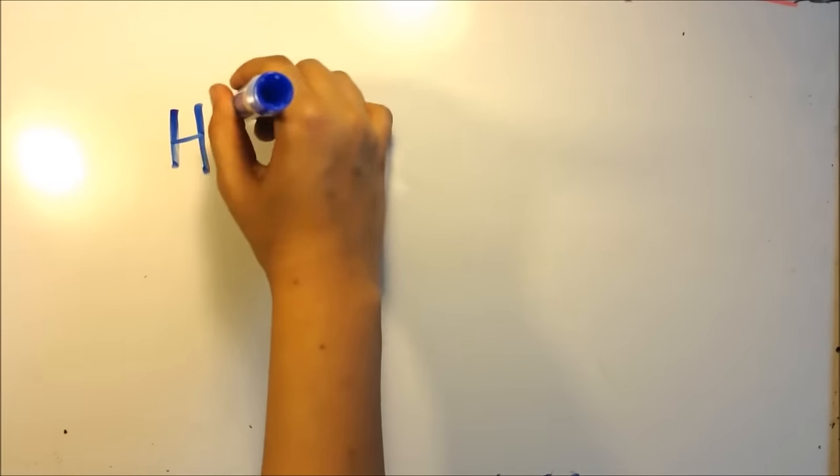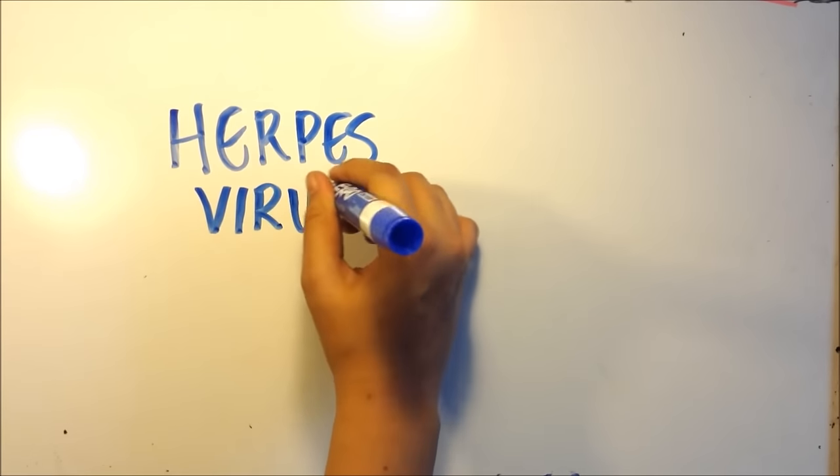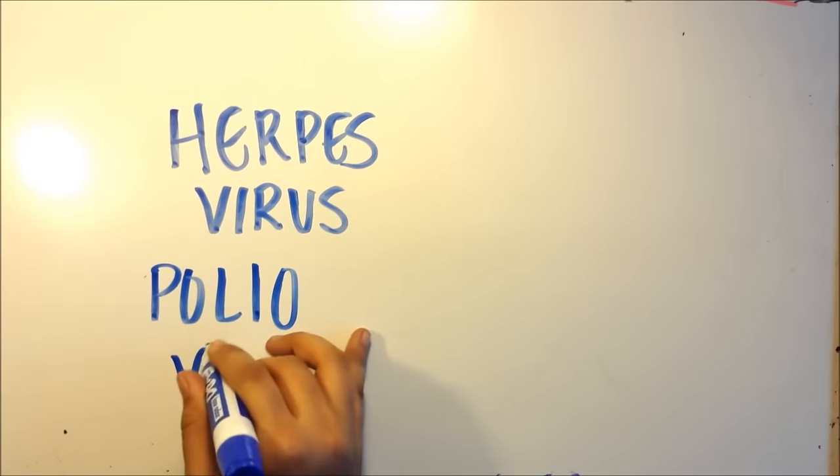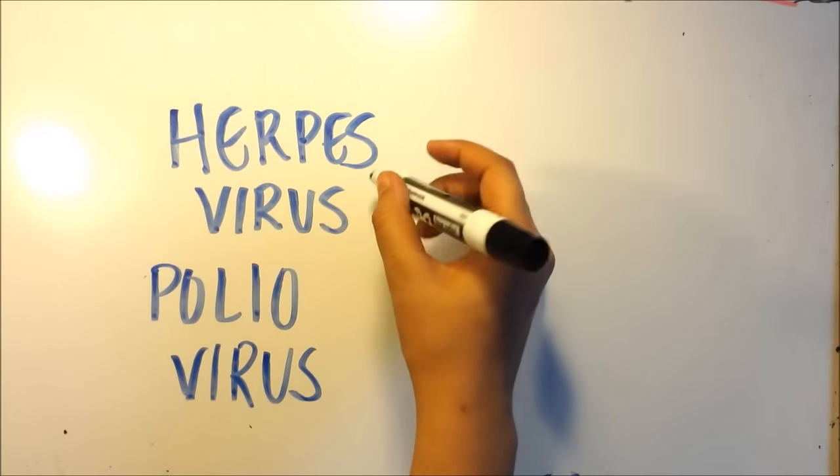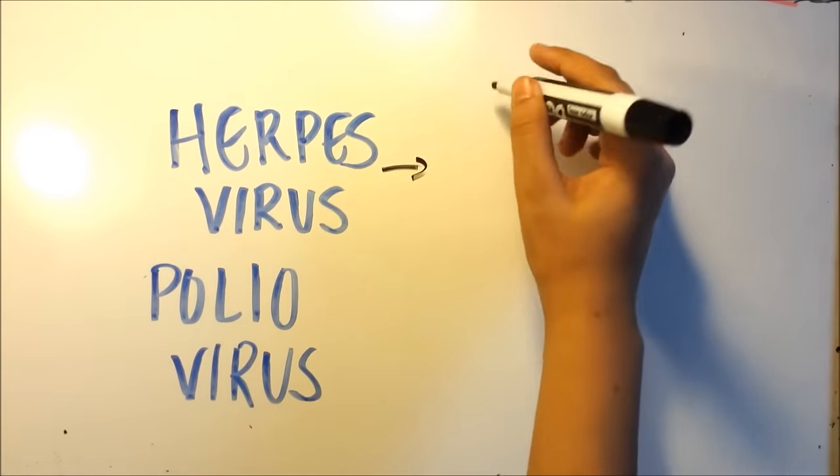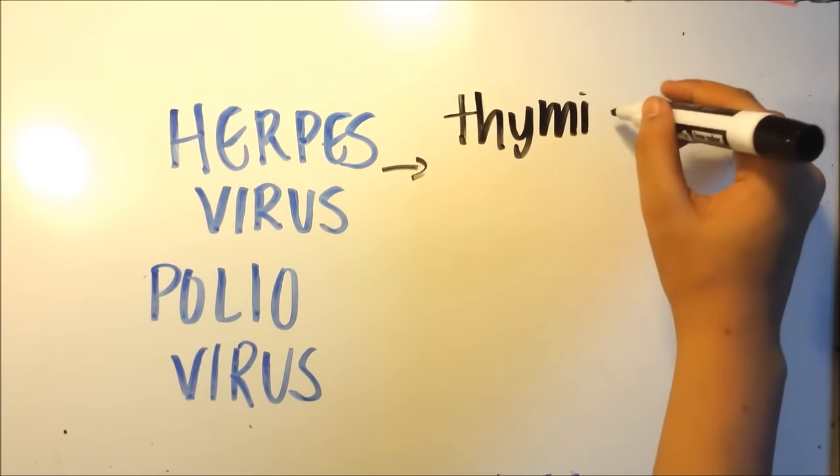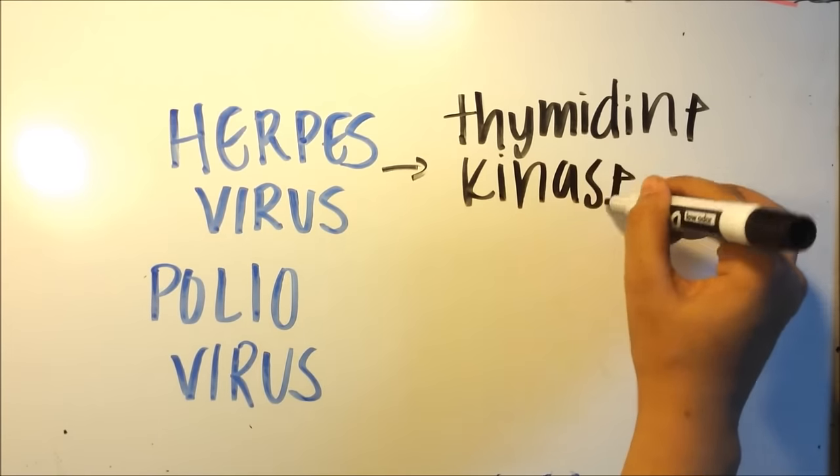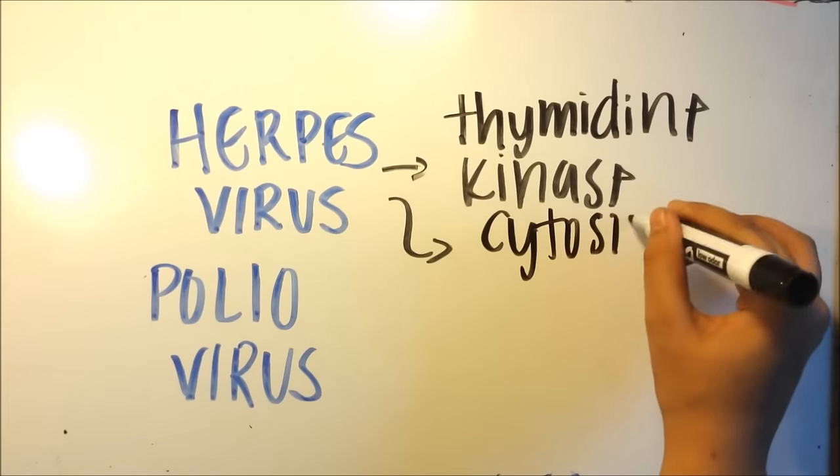Although there's a lot of testing to be done, there's a few types of viruses that are currently being used or are currently in the works of trying to be used as treatment options. That's the herpes virus and the polio virus. Now the herpes virus, what's cool about the herpes virus is that it has a lot of genes in it that already code for cell apoptosis. And one of those are thymidine kinase or cytosine deaminase. These are really long names, but essentially both of these genes code for some kind of component for the cell to kill itself.